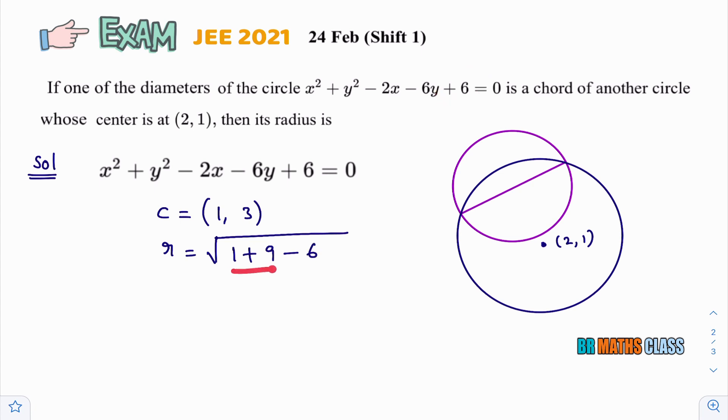If you simplify this, 1 plus 9 is 10. 10 minus 6 is 4. So, root 4 is 2. I will mark those things in this diagram. You can observe, for the given circle, center is (1,3) and radius. You please observe, this is radius only now. This radius, we got it as 2.